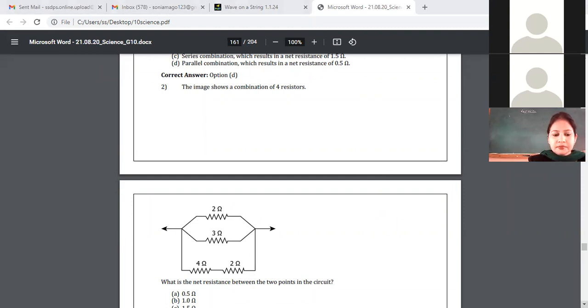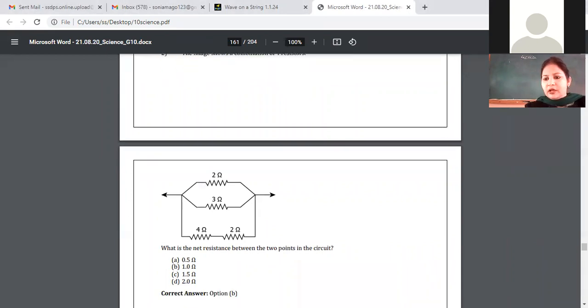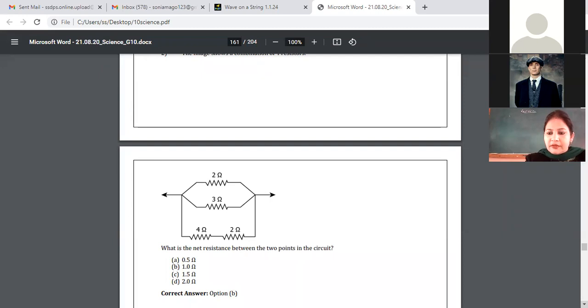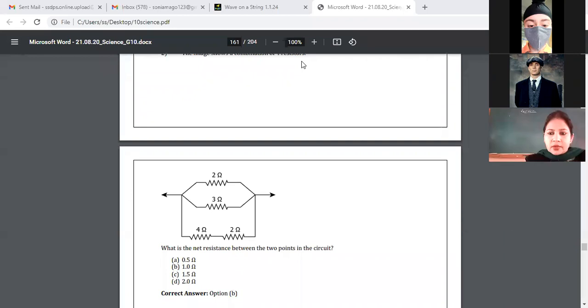Divyansh, what is the answer? Ma'am, 7.2. 36 by 5. Ma'am, 7.1. Ma'am, 2 plus 3 plus 1 in the numerator first. Then 6 by 6, and the reciprocal is 1 ohm.